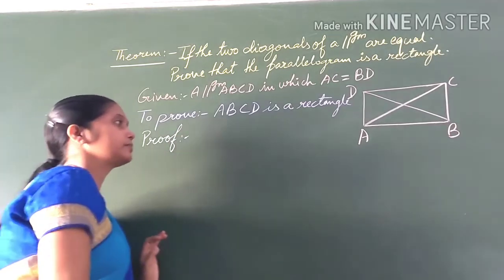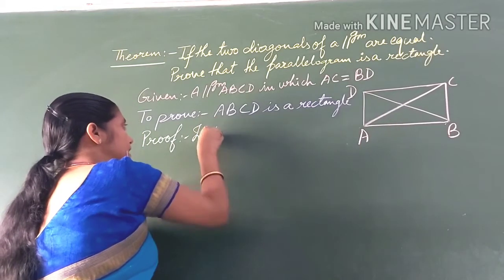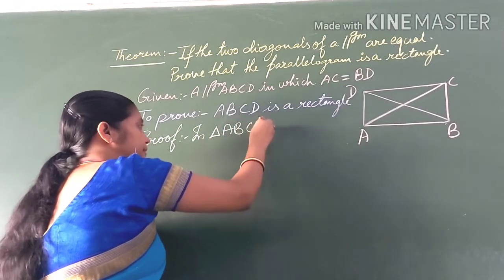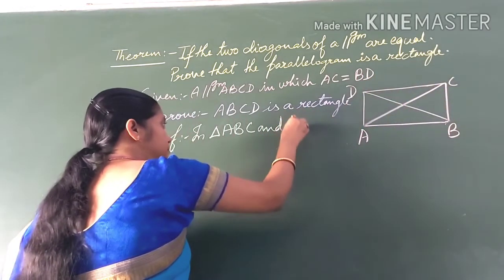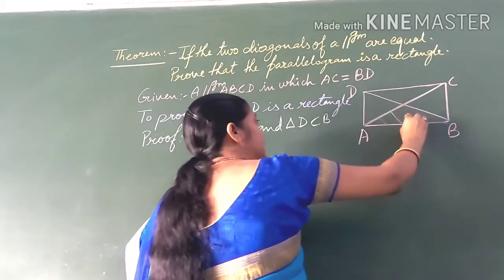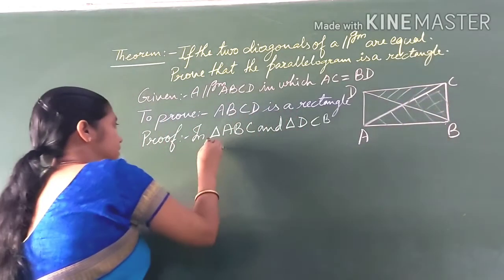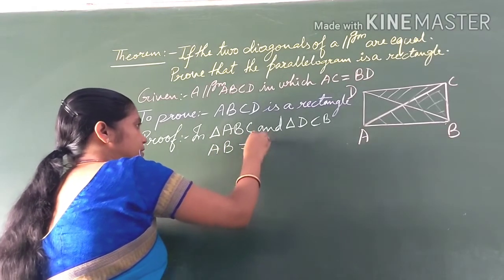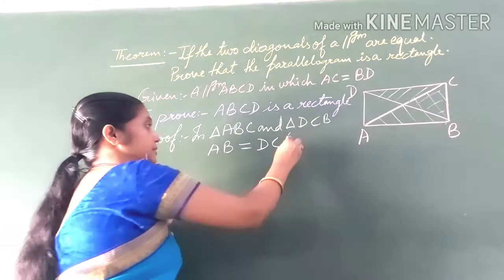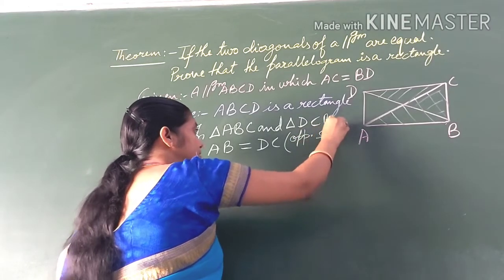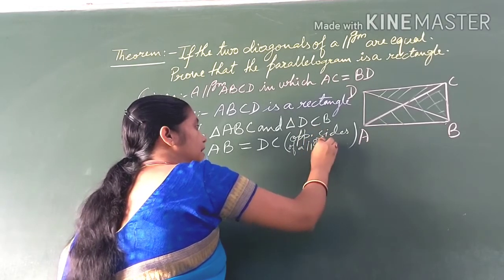Look at triangle ABC and triangle BCD. In these two triangles, AB is equal to DC — opposite sides of a parallelogram are equal. The reason is: opposite sides of a parallelogram are equal.